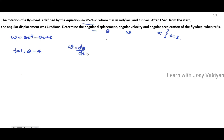Now, since omega equals d-theta over dt, and we have omega as a function of t, integrating omega gives us the angular displacement theta. We have omega here, and we need to find theta. Since we know the equation for omega, we can integrate it to get theta.